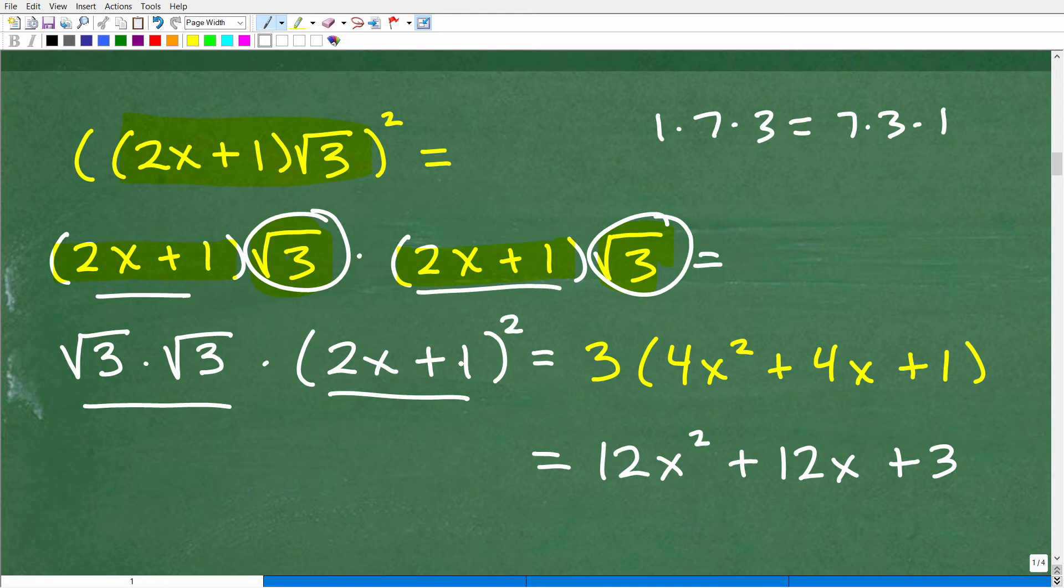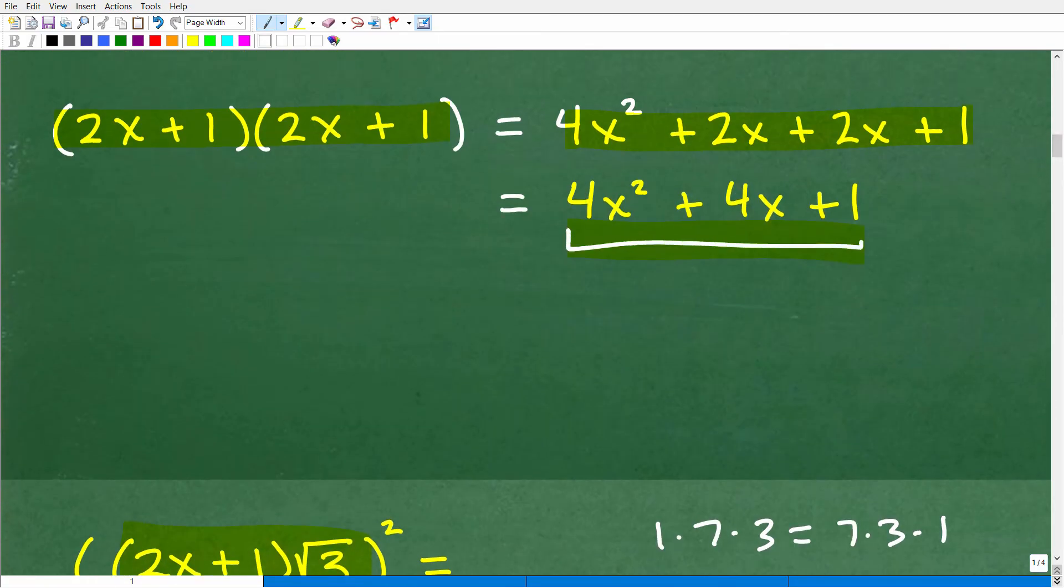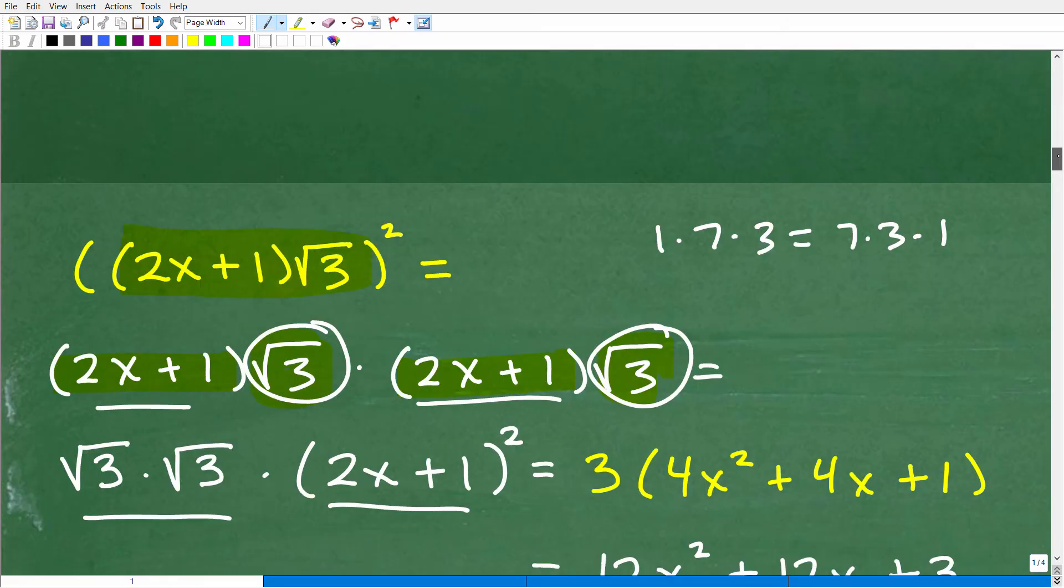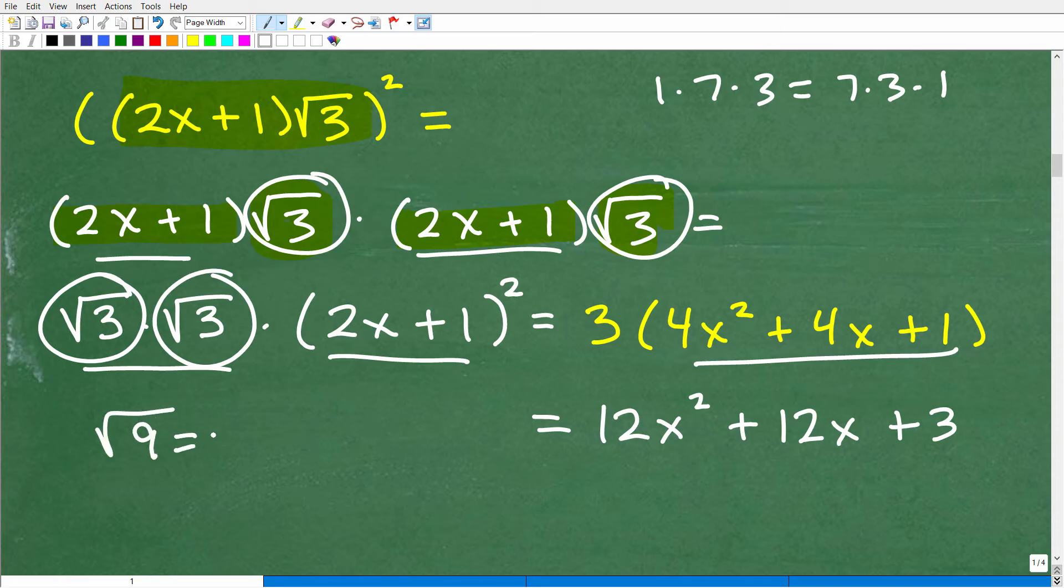That's going to give me (2x+1)². I actually just figured out what that was, right? (2x+1)² is 4x²+4x+1. So I could just use that same result again right there. The square root of 3 times the square root of 3 is going to be the square root of 9 or 3. So that's going to be 3 times this, and, of course, that would give me this expression right here, 12x²+12x+3.